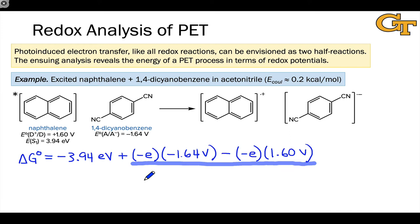So in the absence of photoexcitation, what we end up with here is positive 3.24 electron volts. And this, as a positive number, indicates a highly disfavored, strongly disfavored thermodynamically electron transfer process, much greater than zero.